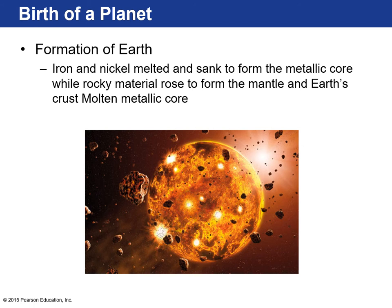Our solar system began to form from a huge nebular dust cloud that was mostly hydrogen and helium but contained microscopic grains of rock fragments and other elements and metals. That huge nebular gas cloud began to coalesce and collapse on itself, forming a flat disk that began to rotate. At the center of this was the most massive object in our solar system — the Sun.